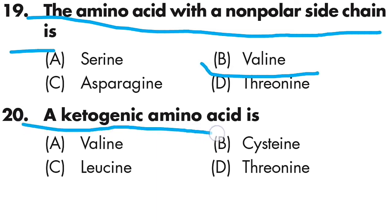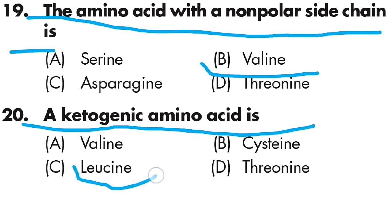Question number twenty: a ketogenic amino acid is — Option A is valine, Option B is cystine, Option C is leucine, Option D is threonine. The correct answer is Option C — leucine is a ketogenic amino acid.